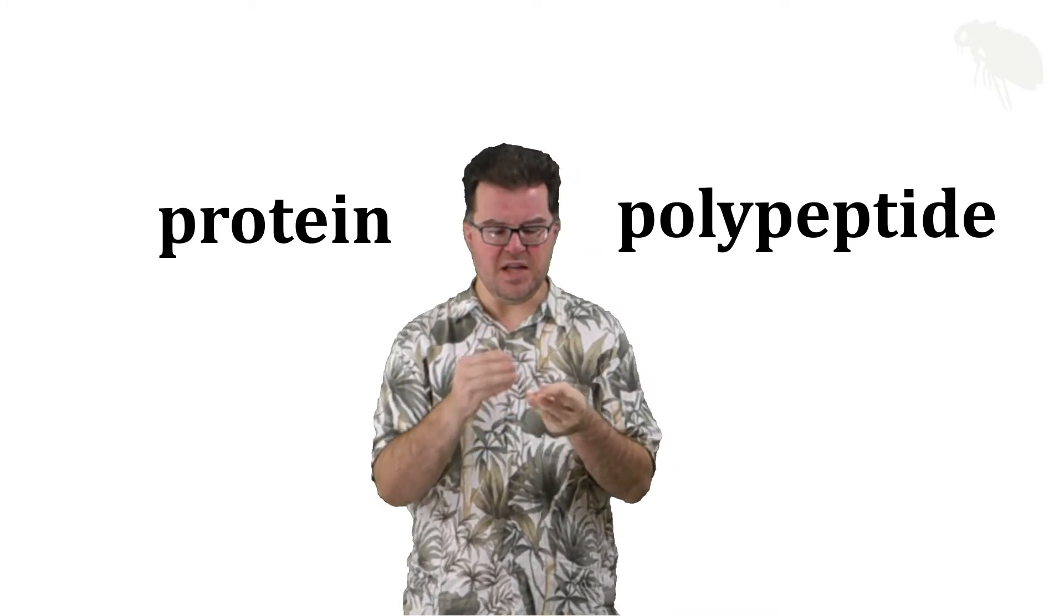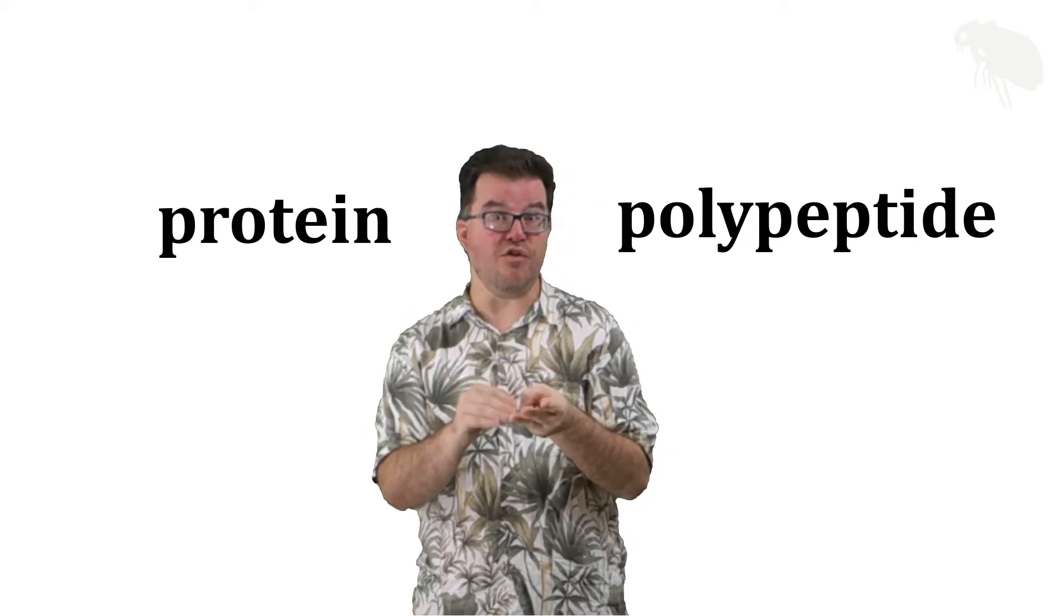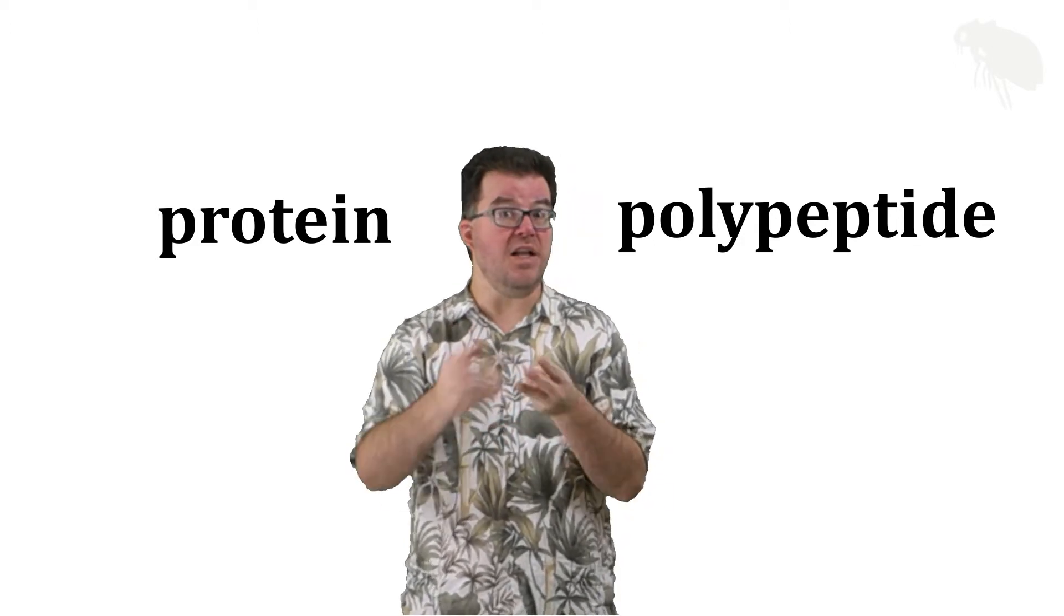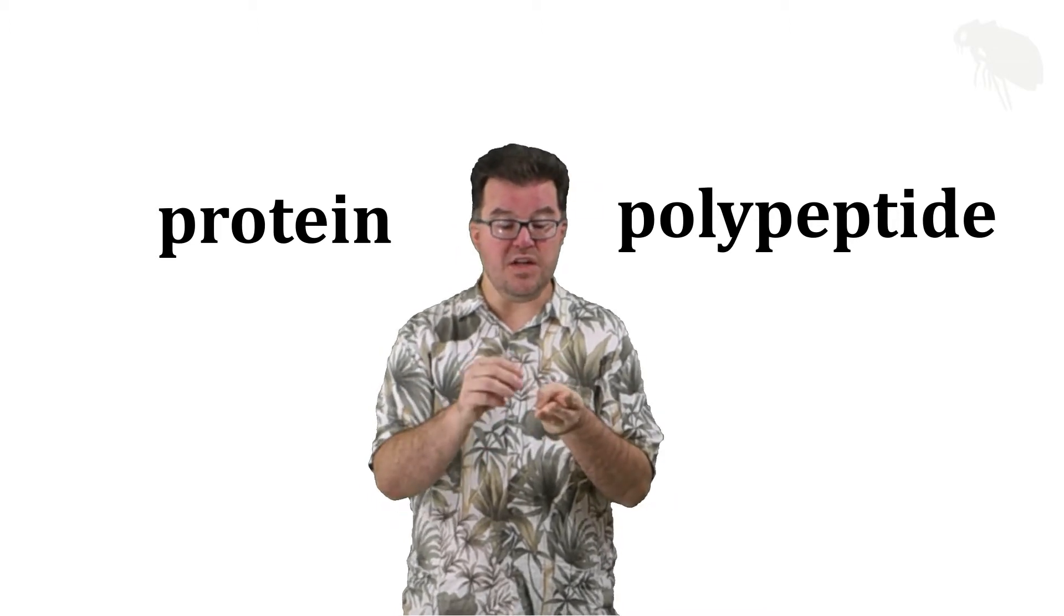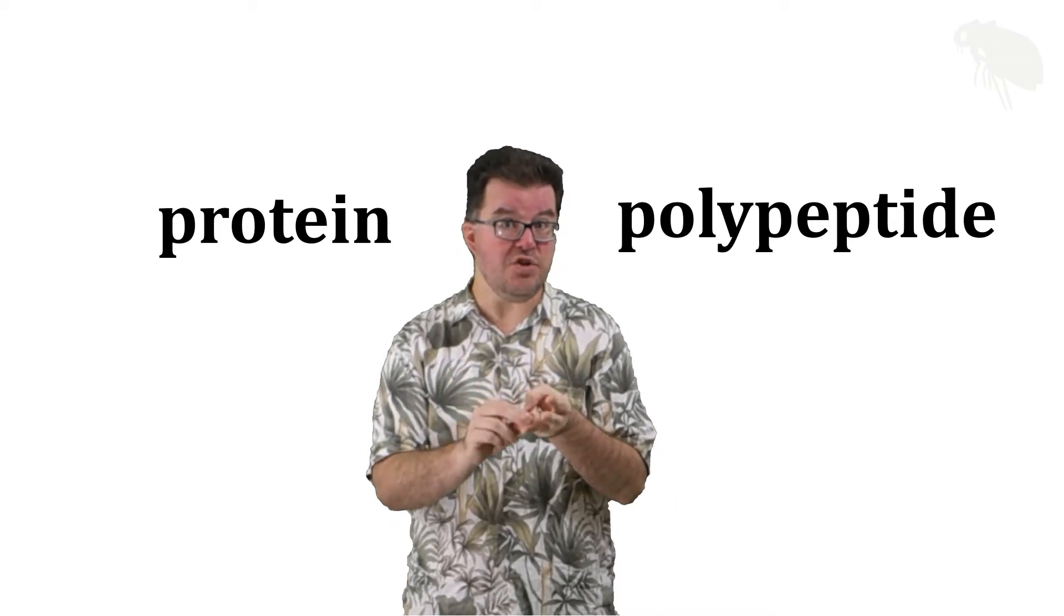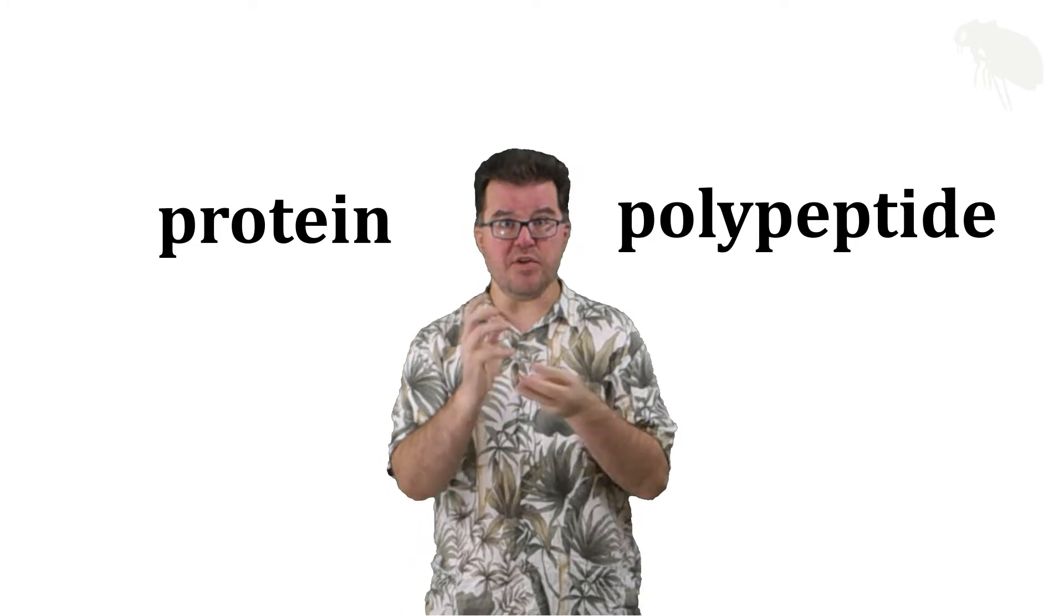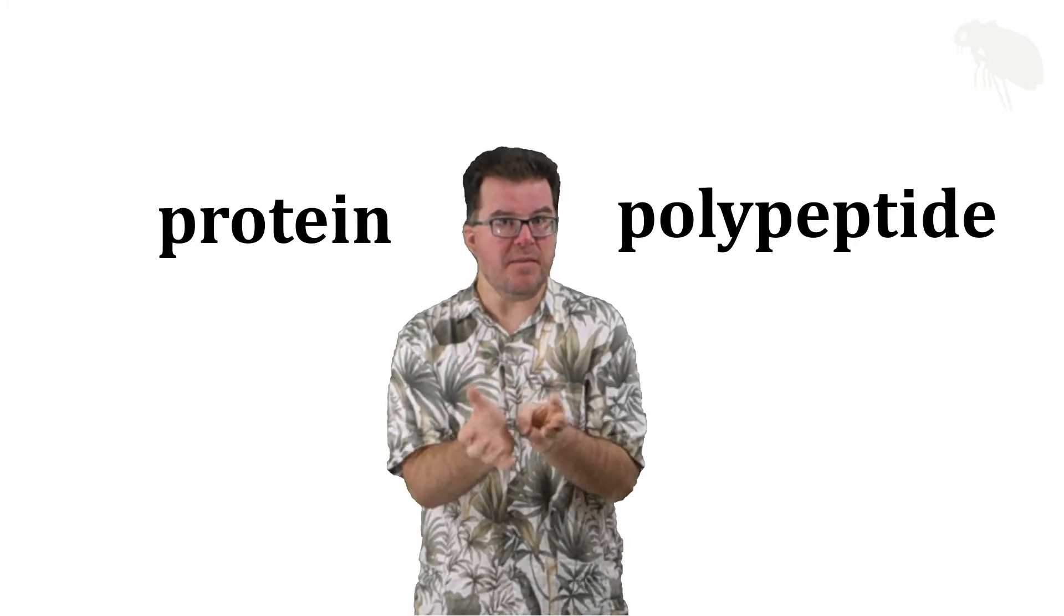Then the secondary structure is folded again at the tertiary level, which is again the polypeptide being folded using forces associated with the side chains into that globular or fiber structure. Again, this is all the polypeptide.